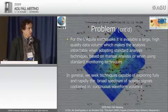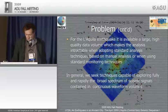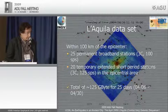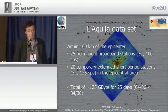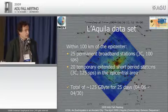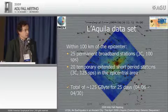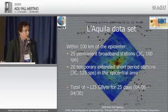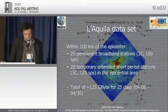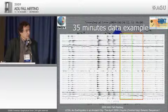We seek techniques capable of fully and rapidly exploring the broad spectrum of seismic signals contained in continuous waveform volumes. For the L'Aquila data set, within 100 kilometers of the epicenter we have 25 permanent broadband stations plus about 20 temporary extended short-period stations — a total of about 125 gigabytes for 25 days of operation that we have analyzed.